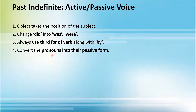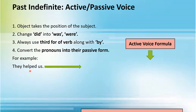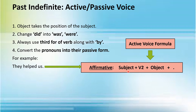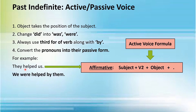Number three: you always use the third form of the verb along with 'by'. Number four: convert the pronouns into the passive form. For example, consider the sentence 'They helped us.' How would you identify that this is the past indefinite tense? This sentence has been made following a specific formula. To have a good grip on the correct formation of affirmative, negative, and interrogative sentences of past indefinite tense, I would suggest you go and watch a related video — I'll be adding the link in the description box.